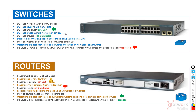Switches create a single network of devices, while routers connect different networks together. Routers do not connect devices to make a network; they connect existing networks together. Switches combine many devices to make one network, and then routers connect those networks further — so we have two layers of operation.